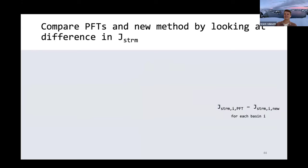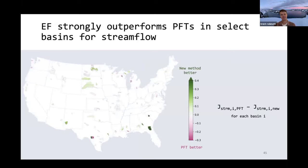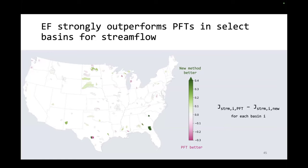So finally, to get to the good stuff, this equation here on the right is going to be the metric I'm using to evaluate performance, where I'm using that objective function as found by our PFT based model minus the objective function as found by our new optimization method. When we compare the two methods, we get this map where everywhere in green is where our new method that I've presented here is doing better. Everywhere in pink is where the plant functional type method is doing better. Two minutes left, Trent. Thank you.